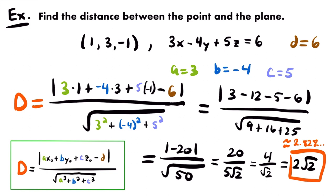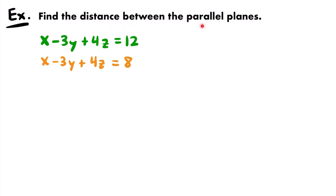Now let's look at a different type of distance. In this example, we want to find the distance between parallel planes. We have two plane equations that look very similar because they are parallel. Parallel planes share the same normal vector, so the coefficients of x, y, and z for those two planes should be the same. The only difference between these two equations is the value of d. To calculate this distance, you need the formula for the distance between two parallel planes.